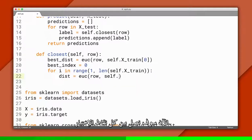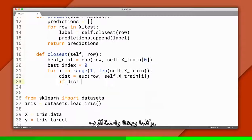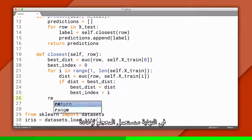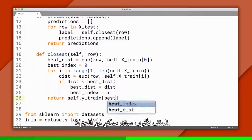Now we'll iterate over all the other training points, and every time we find a closer one, we'll update our variables. Finally, we'll use the index to return the label for the closest training example.